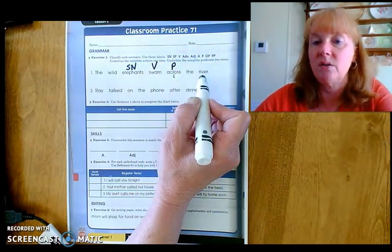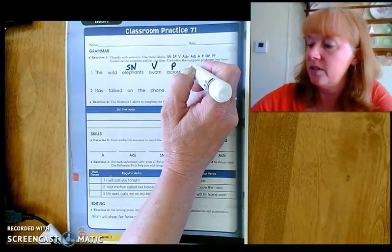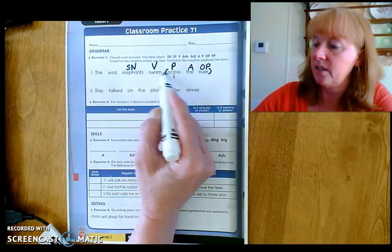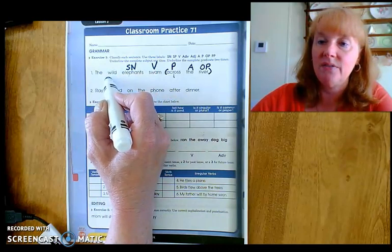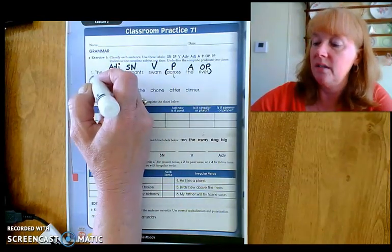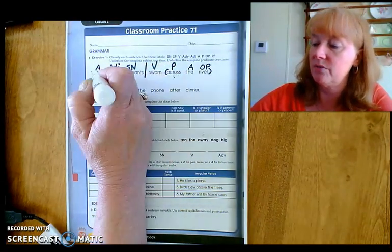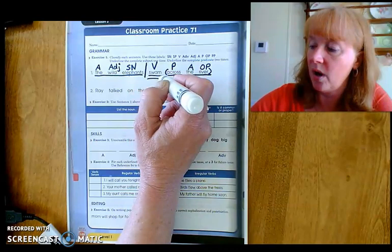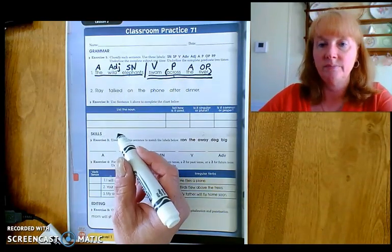Across what? River. Object of the preposition. The article adjective. Across the river, prepositional phrase. And now we're at the end of our sentence. We go back to our subject noun and work our way back towards the beginning. What kind of elephants? Wild. Adjective. The article adjective. Go back to the verb. Divide the complete subject from the complete predicate. Underline the complete subject once and the complete predicate twice.